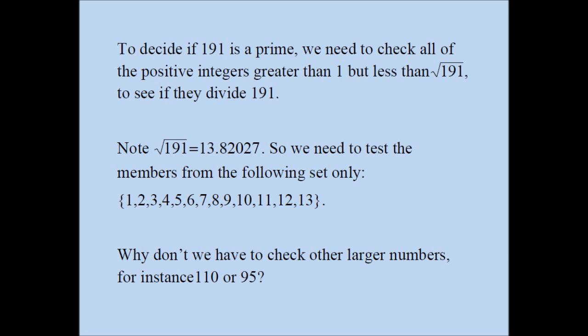To decide if 191 is a prime, we need to check all of the positive integers greater than 1 but less than square root of 191 to see if they divide 191. Note, the square root of 191 is 13.82027. So we need to test the members from the following set only: 1, 2, 3, 4, 5, 6, 7, 8, 9, 10, 11, 12, 13.